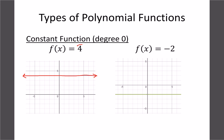Our constant is four, so that's our y-intercept. Our leading coefficient is also four, which is positive, so the line is above the x-axis. If we have y equals negative two, we get a constant line going through negative two, which is below the x-axis. Constant graphs aren't a big deal but they do show up once in a while.